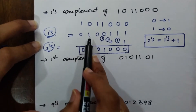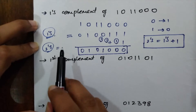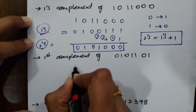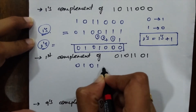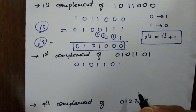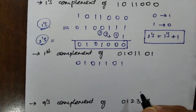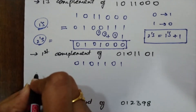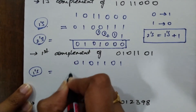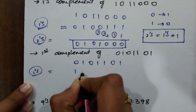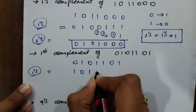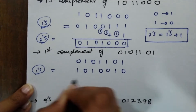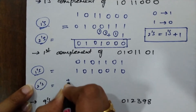Remember: the 1's complement is obtained by simply inverting all digits, and the 2's complement is obtained by adding 1 to the 1's complement. Let's take another example: find the 1's complement and 2's complement of 00101101. Make sure to carefully note down the given problem — never alter any digit by mistake, as it completely changes your answer. For the 1's complement, invert each digit: 0→1, 0→1, 1→0, 0→1, 1→0, 1→0, 0→1, 1→0. The 1's complement is 11010010.